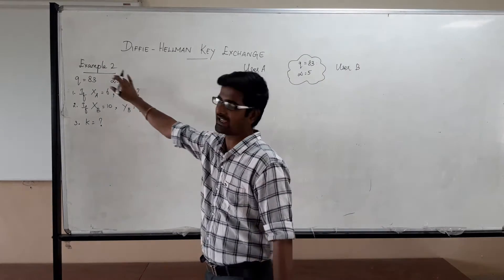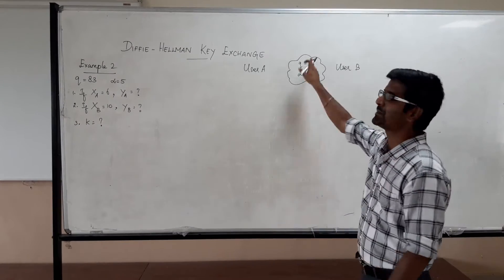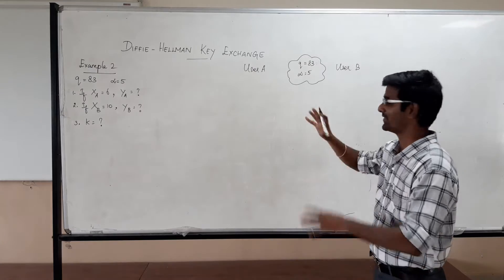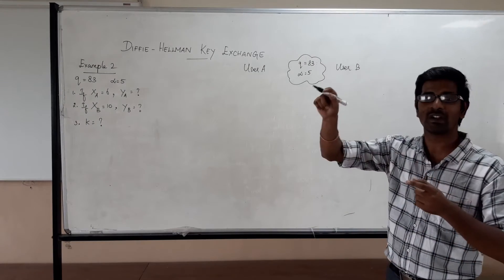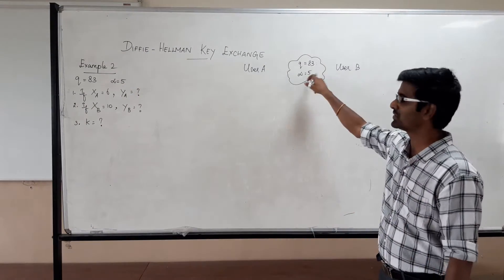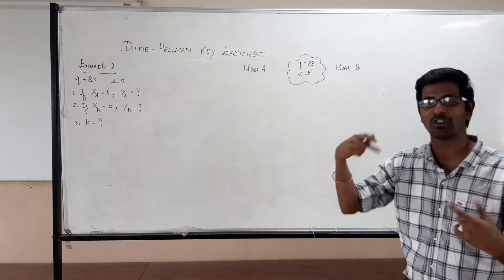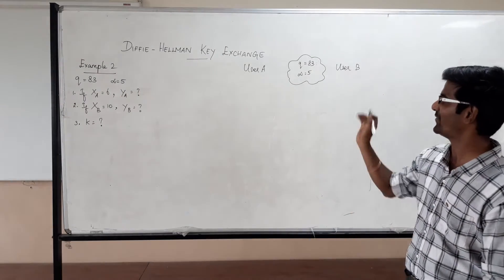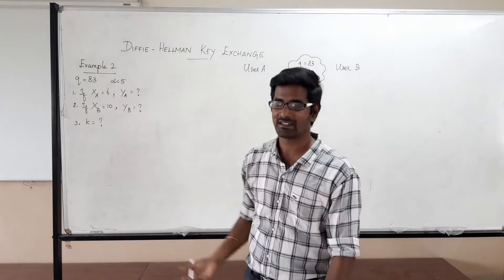Like alpha equal to 5 and q is equal to 83, but I am not going to prove whether 5 is a primitive root of 83 because it is a very tedious process. Just see 5 power 1 mod 83, 5 power 2 mod 83, up to 5 power 82 mod 83. Of course, there are some shortcuts to do that, but here I am not concerned about proving whether 5 is a primitive root of 83 or not. Rather, I will focus on the Diffie-Hellman key exchange process.